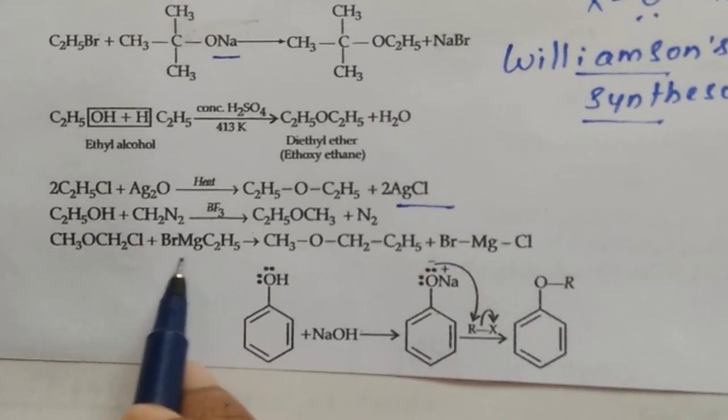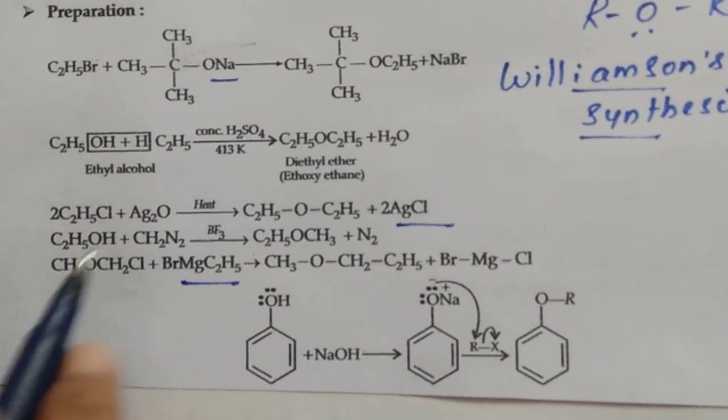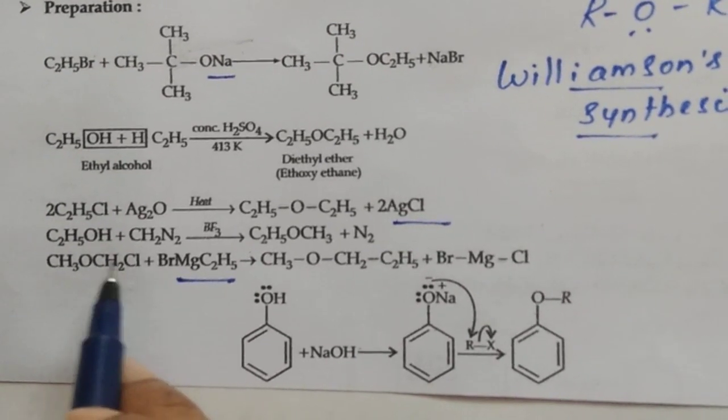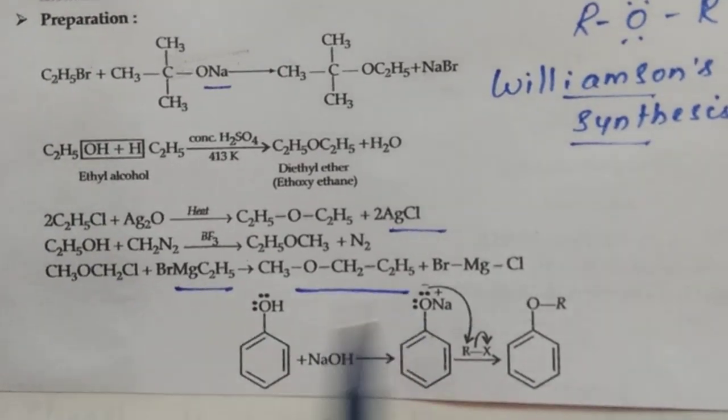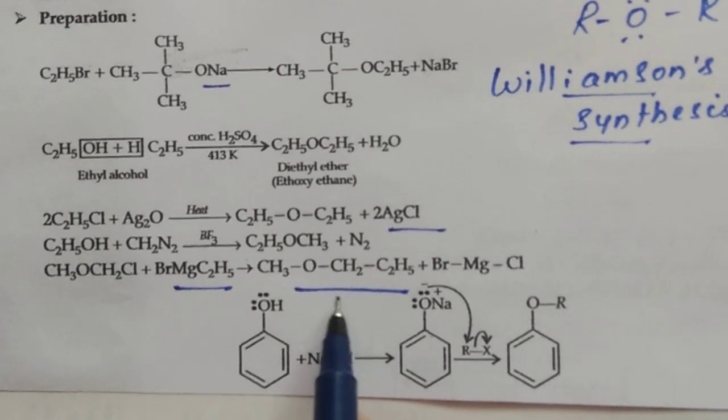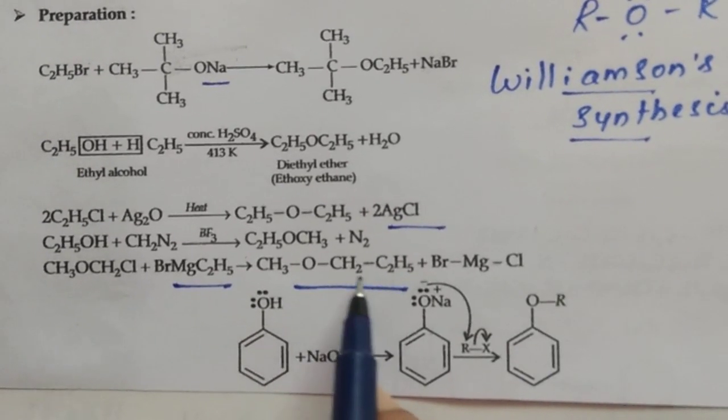Here, this is also Grignard reagent, RMgBr. This will react with this particular compound here. Cl is removed. Then we get higher number of ethers. This is cross ethers where two different alkyl groups are substituted here.